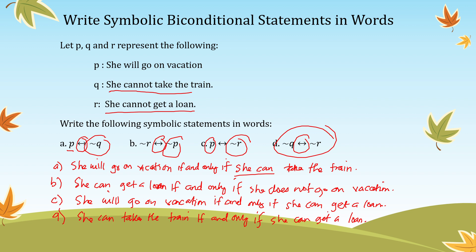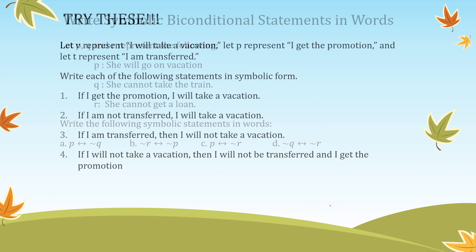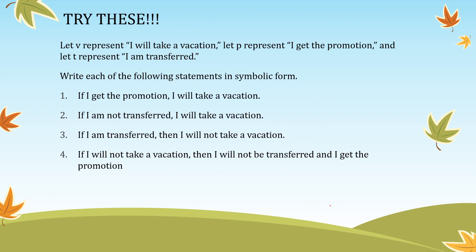Now try this at home. Let P represent 'I will take a vacation,' Q represent 'I get the promotion,' and R represent 'I am transferred.' Write each of the following statements in symbolic form.